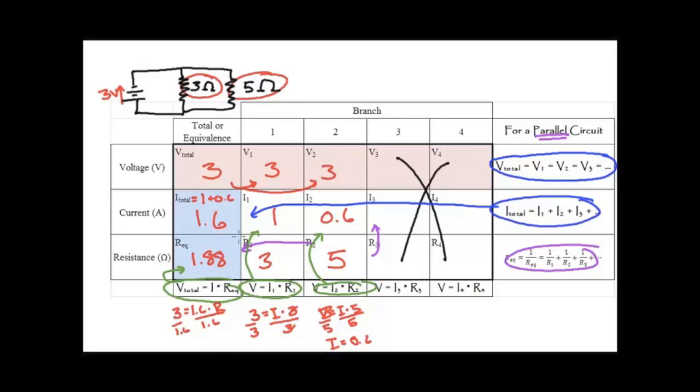Now there's a way that I can check, and that involves using these rules again. And so, 1 over R_EQ, that is, technically I know R_EQ is 1.88, but let's see if I can get that number by using a different means. Equals 1 over, what is the resistance at component number 1? Three. Plus 1 over, what is the resistance at component number 2? Five.